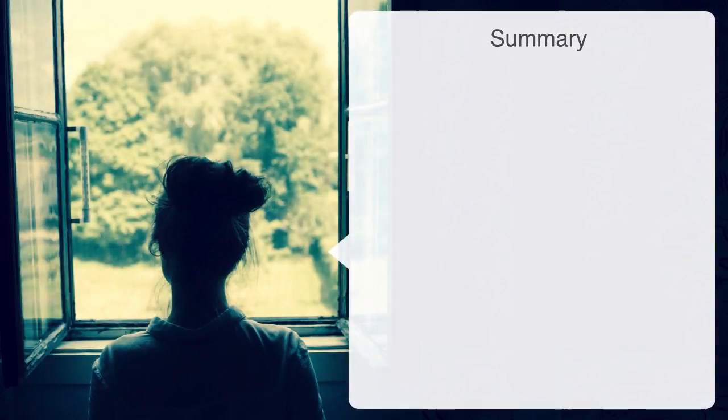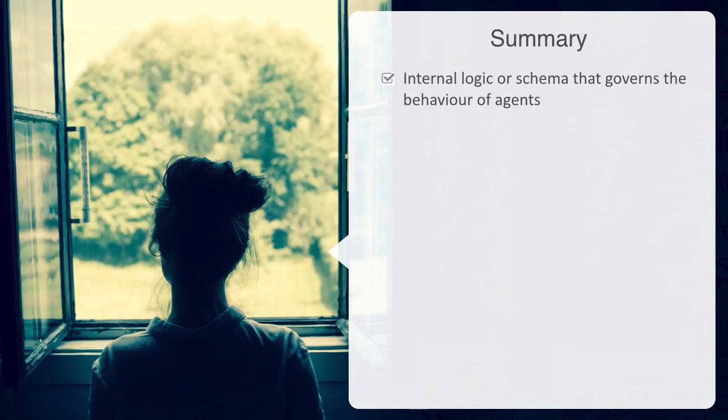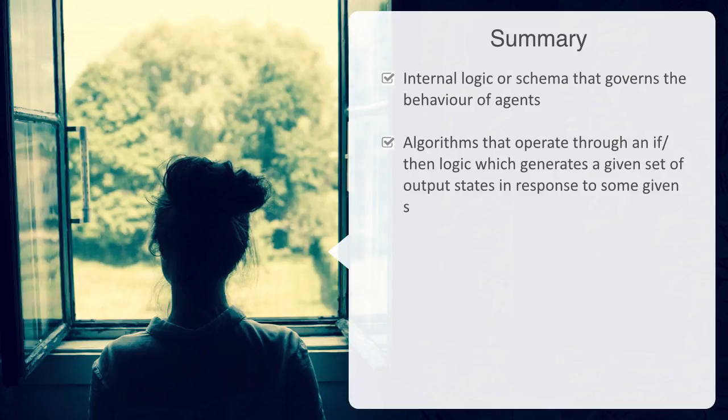In summary then, we have been talking about the internal logic or schema that governs the behavior of agents within complex adaptive systems. We tried to show how this logic can span from the very elementary to the very complex. At the simplest end of the spectrum, we looked at algorithms that typically operate through an if-then logic